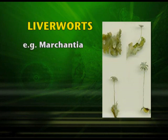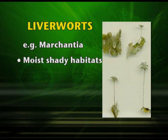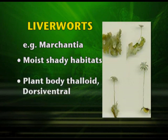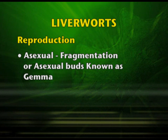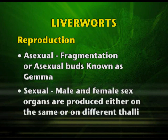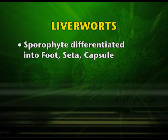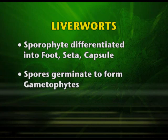Marchantia comes under liverworts. They grow in moist shady habitats. Their plant body is thaloid and dorsiventral. Reproduction may be by asexual means — that is by fragmentation or asexual buds known as gemmae. Sexual reproduction involves male and female sex organs produced either on the same or different thalli. When on the same thallus they are referred to as homothalic, and when on different thalli they are heterothalic. The sporophyte is differentiated into foot, seta, and capsule. The spores germinate to form the gametophytes.